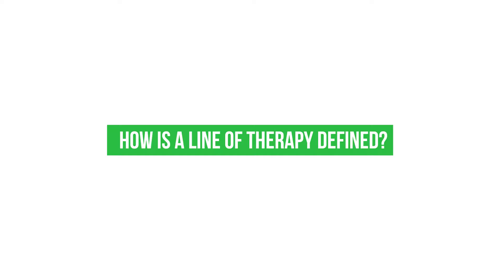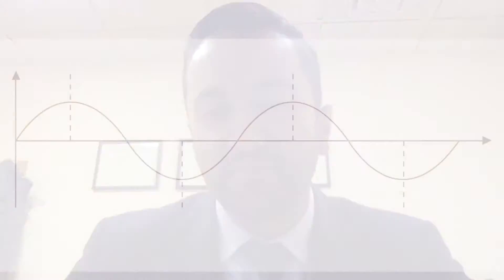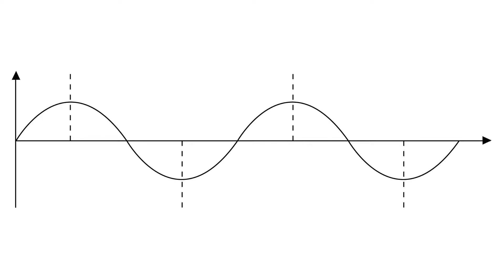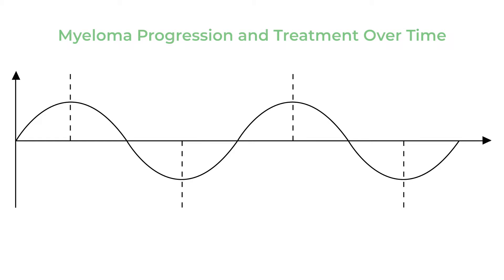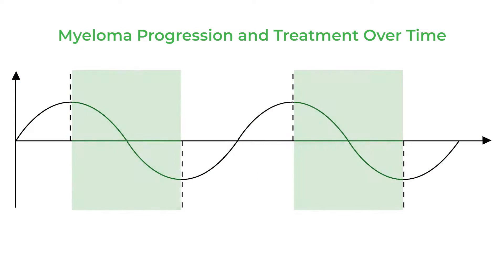How is a line of therapy defined? Lines are getting blurred when we define them. Here's a graph showing the progression of myeloma over time — when the line goes up, myeloma is growing or the patient is relapsing; when the line goes down, the myeloma is responding to lines of treatment.